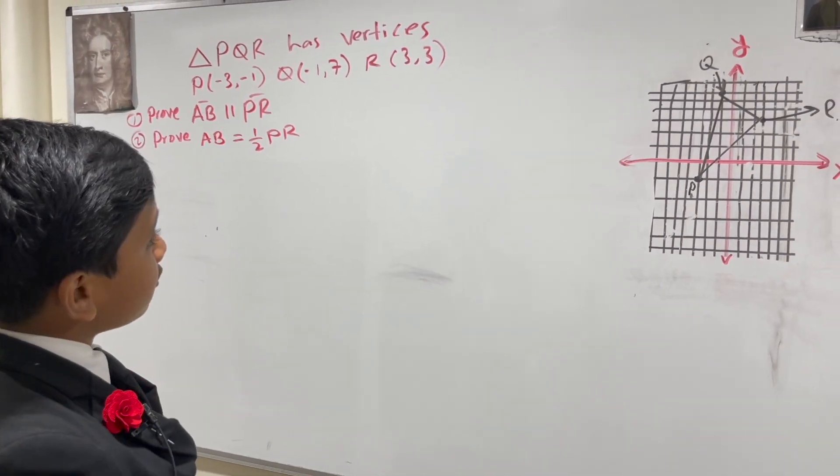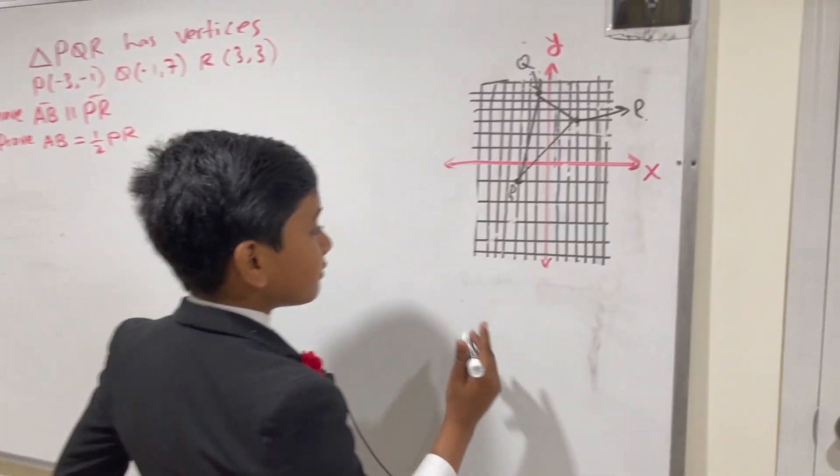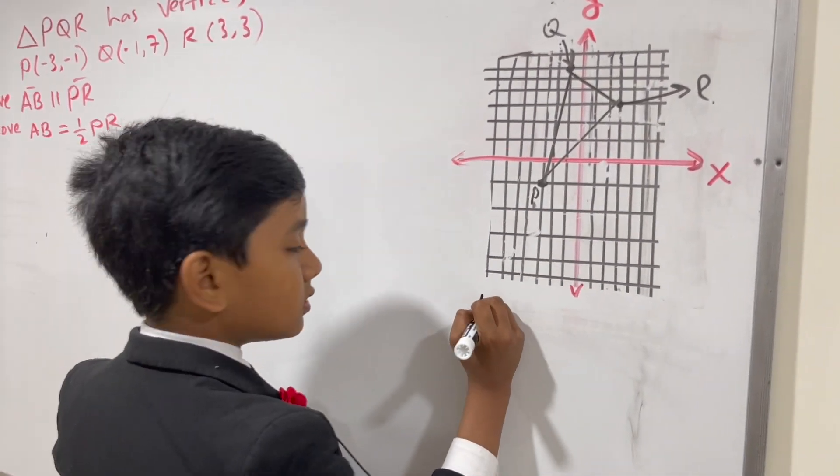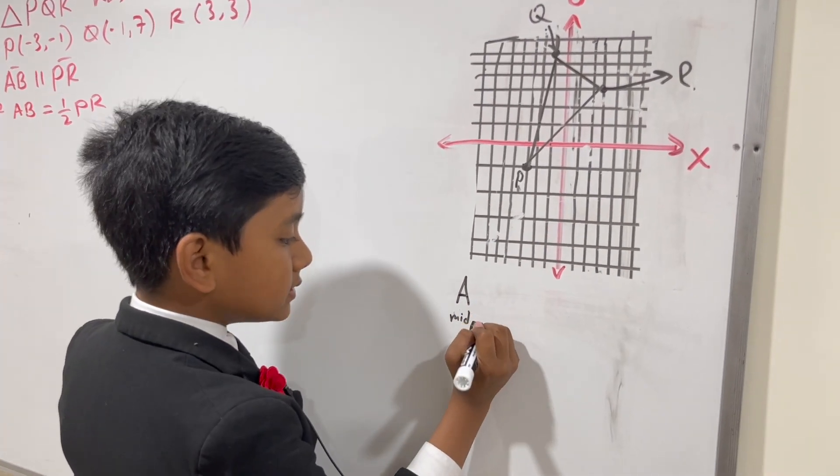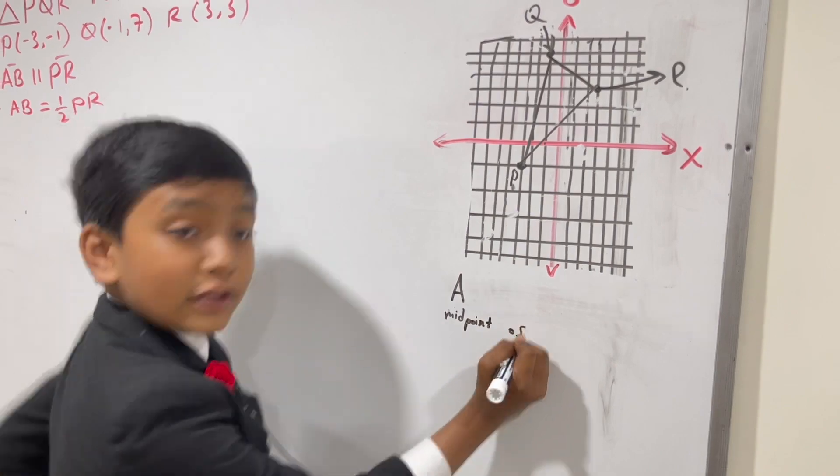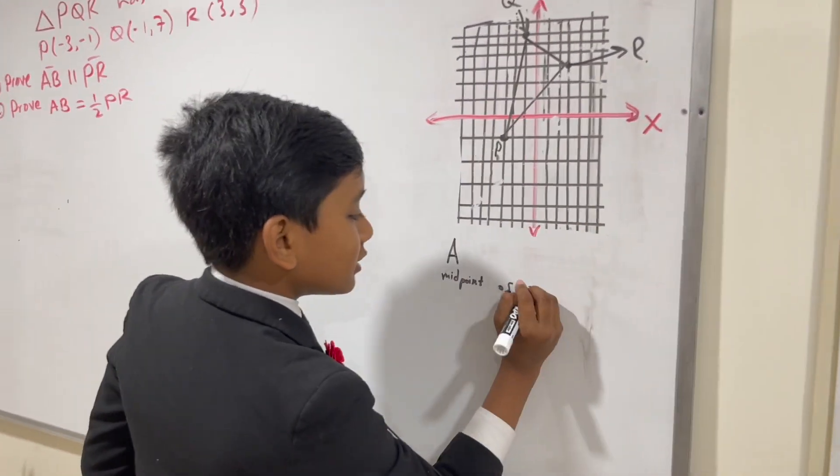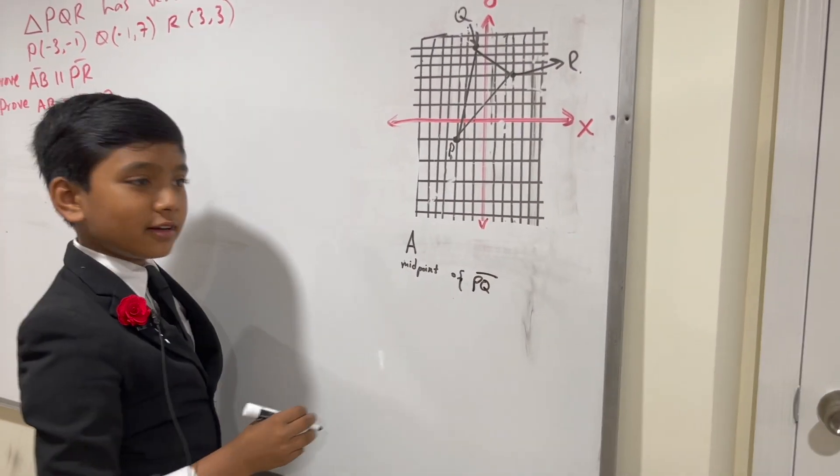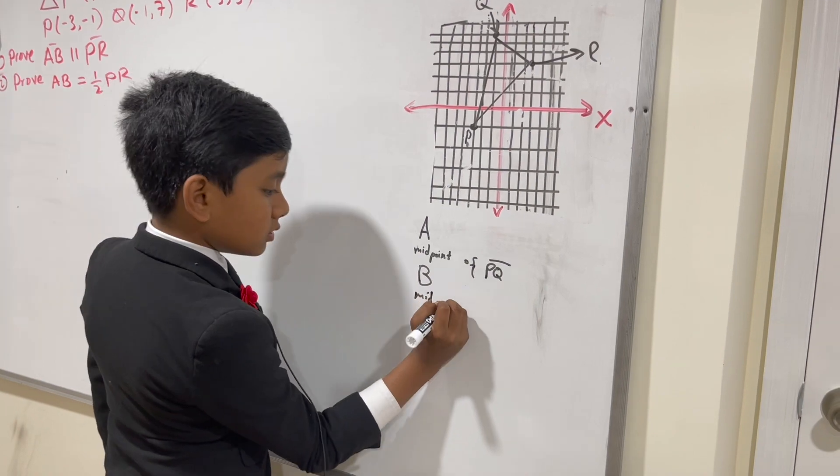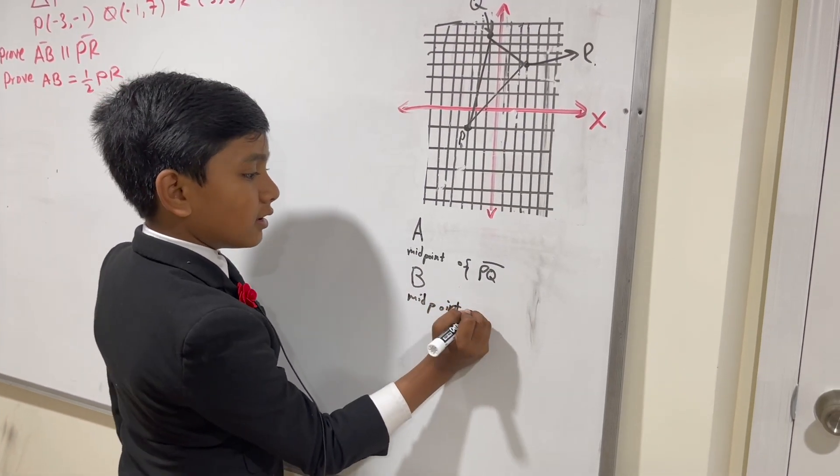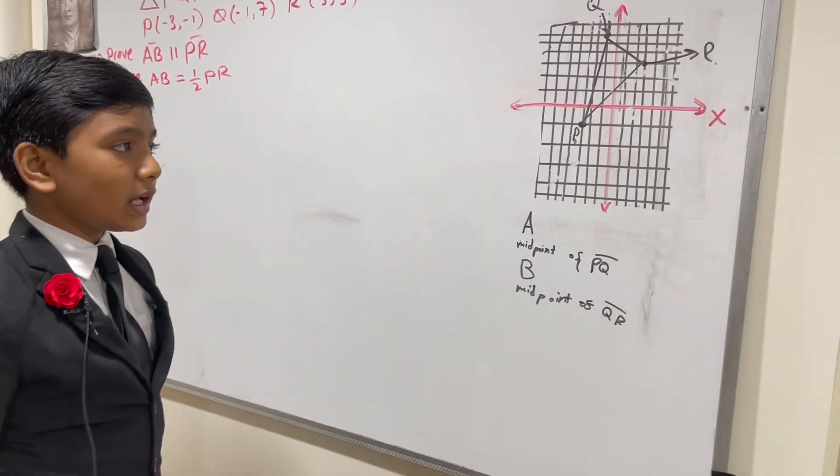So P, Q, R. Now, what is A and what is B? Well, A is the midpoint of P, Q. B is the midpoint of Q, R.